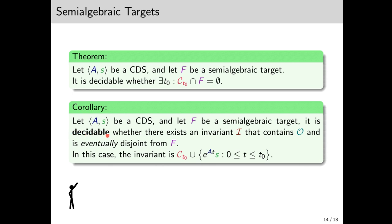But we can decide, unconditionally, whether there exists an eventual invariant, one that contains the orbit from some point and on, namely CT0. So we have two issues to deal with.